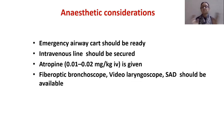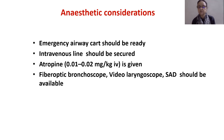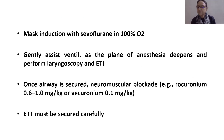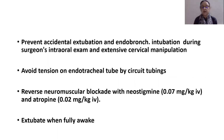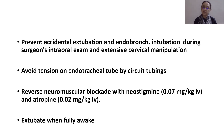Anesthetic considerations for enlarged neck swelling: an emergency airway cart should be ready, IV line secured, atropine given, and fiberoptic bronchoscope, video laryngoscope, and SAD should be available. Perform mask induction with sevoflurane, gently assist ventilation as the plane of anesthesia deepens, then perform laryngoscopy and endotracheal intubation. Once the airway is secured, administer neuromuscular blockade — rocuronium, vecuronium, or atracurium. The endotracheal tube must be secured carefully to prevent accidental extubation and endobronchial intubation during surgeon's intraoral examination and extensive cervical manipulation. Avoid tension on the tube from circuit tubing. Reverse neuromuscular blockade with neostigmine and atropine and extubate the baby when fully awake.